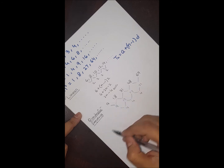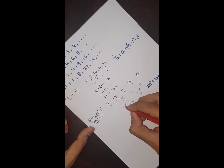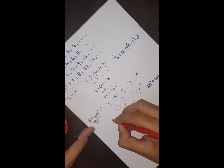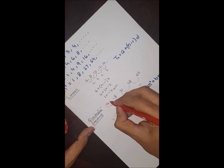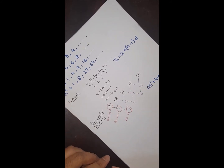For a quadratic sequence we use the formula: an² + bn + c. To find a, b, and c we use three equations: 2a equals the second common difference; 3a + b equals the first level difference; and a + b + c equals the first term.